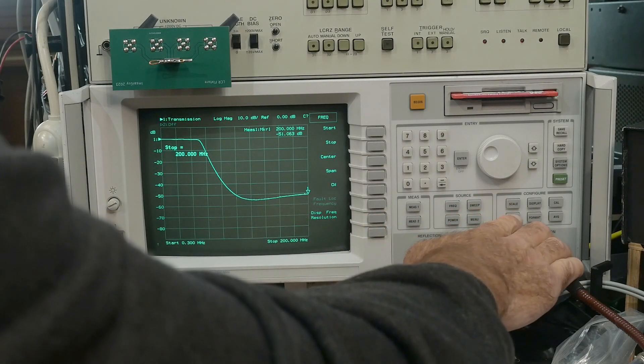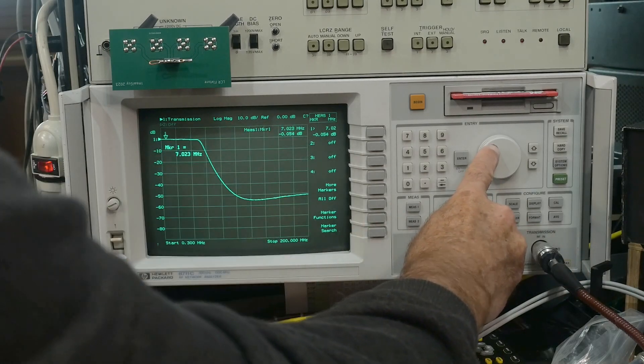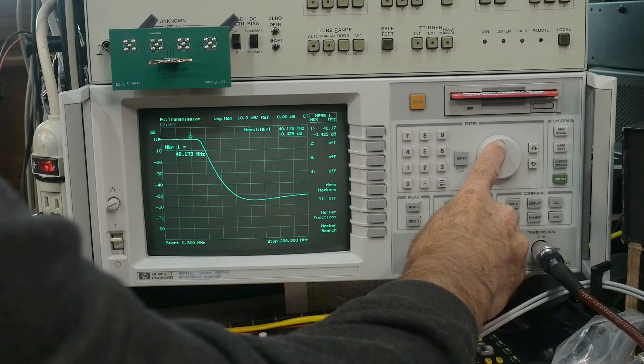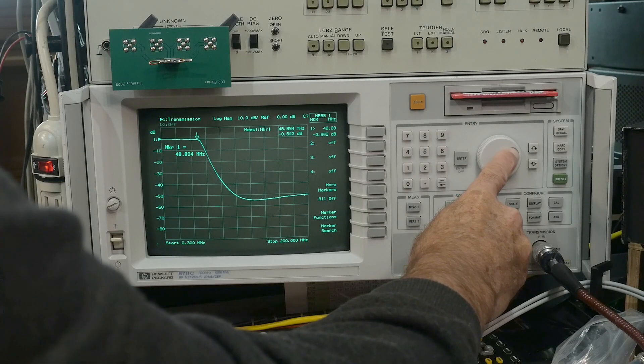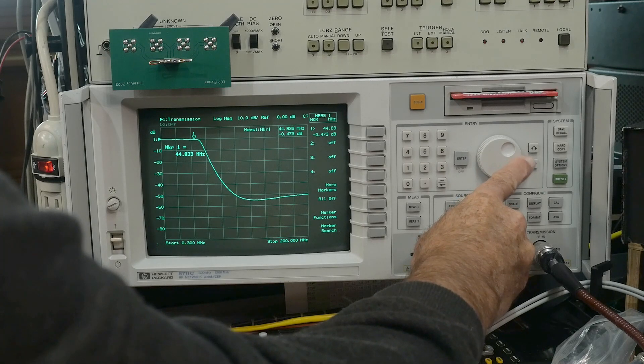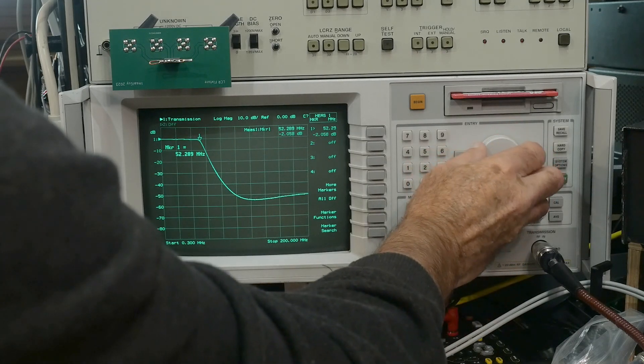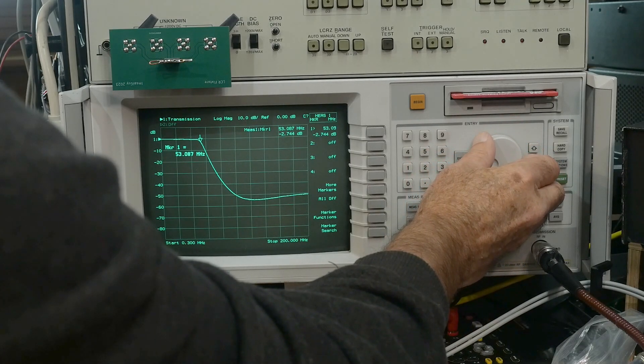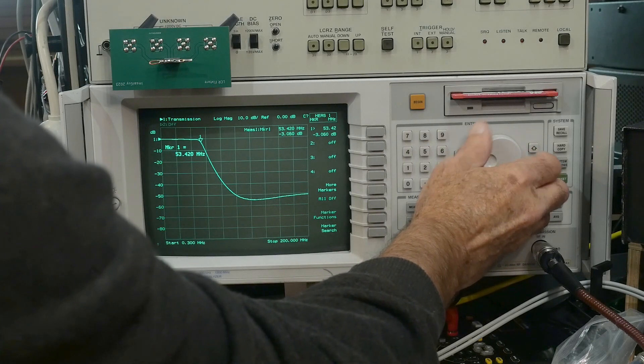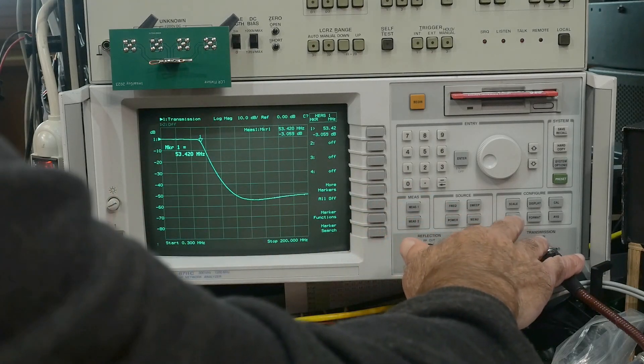And then let's do a marker. We can look at our insertion loss here, 0.1 dB. At 40 megahertz, it's 0.4 dB. And it's a 45 megahertz filter. So at 45, it's about 0.5 dB. And let's look at its 1 dB roll off. It's 1 dB roll off is around here at 53 megahertz. So yeah, it's doing the thing.